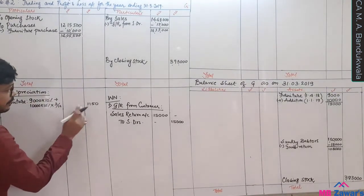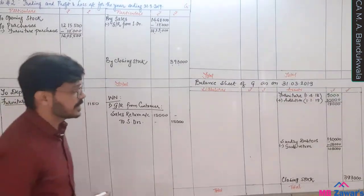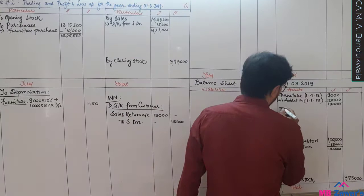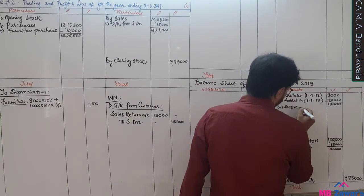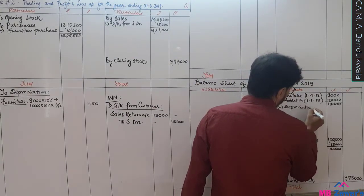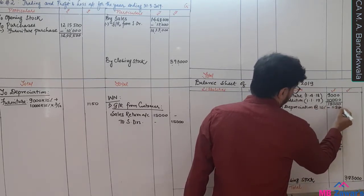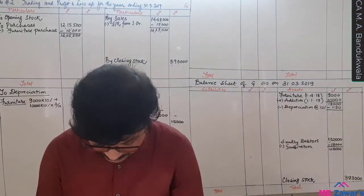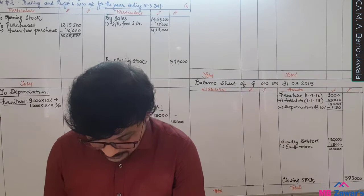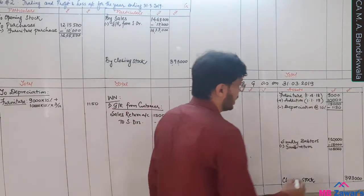So 1,150 rupees is your depreciation. The second effect: subtract 1,150 from furniture. Depreciation at 10% minus 1,150. Net value of furniture = 19,000 minus 1,150 = 17,850 rupees as on 31st March.